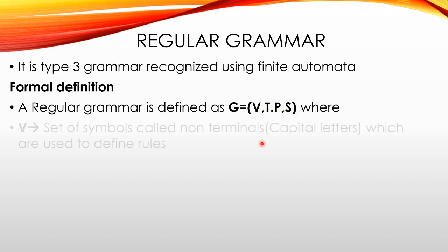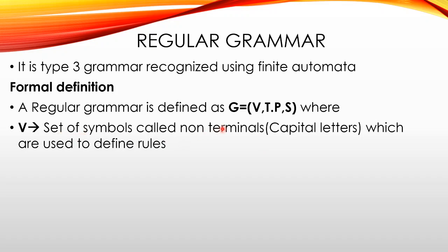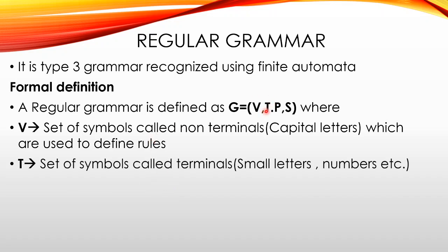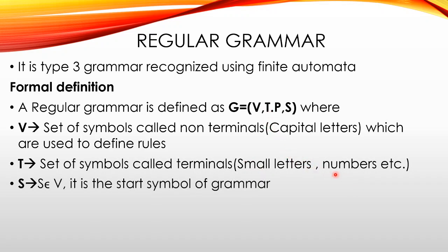V is a set of symbols called Non-Terminals, generally represented by capital letters, which are used to define rules. T is a set of symbols called Terminals, generally represented by small letters or numbers. S is an element of V, which means S is a Non-Terminal and it is the start symbol of the Grammar.